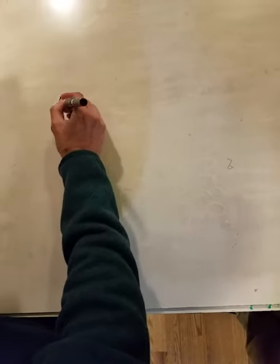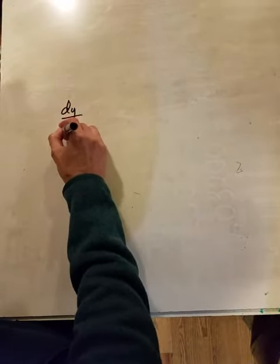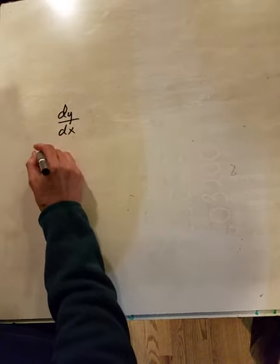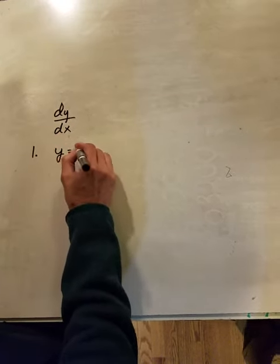First one, we're going to take dy dx, so the derivative of y with respect to x, of each of these things. Number one, we have y is equal to 5.